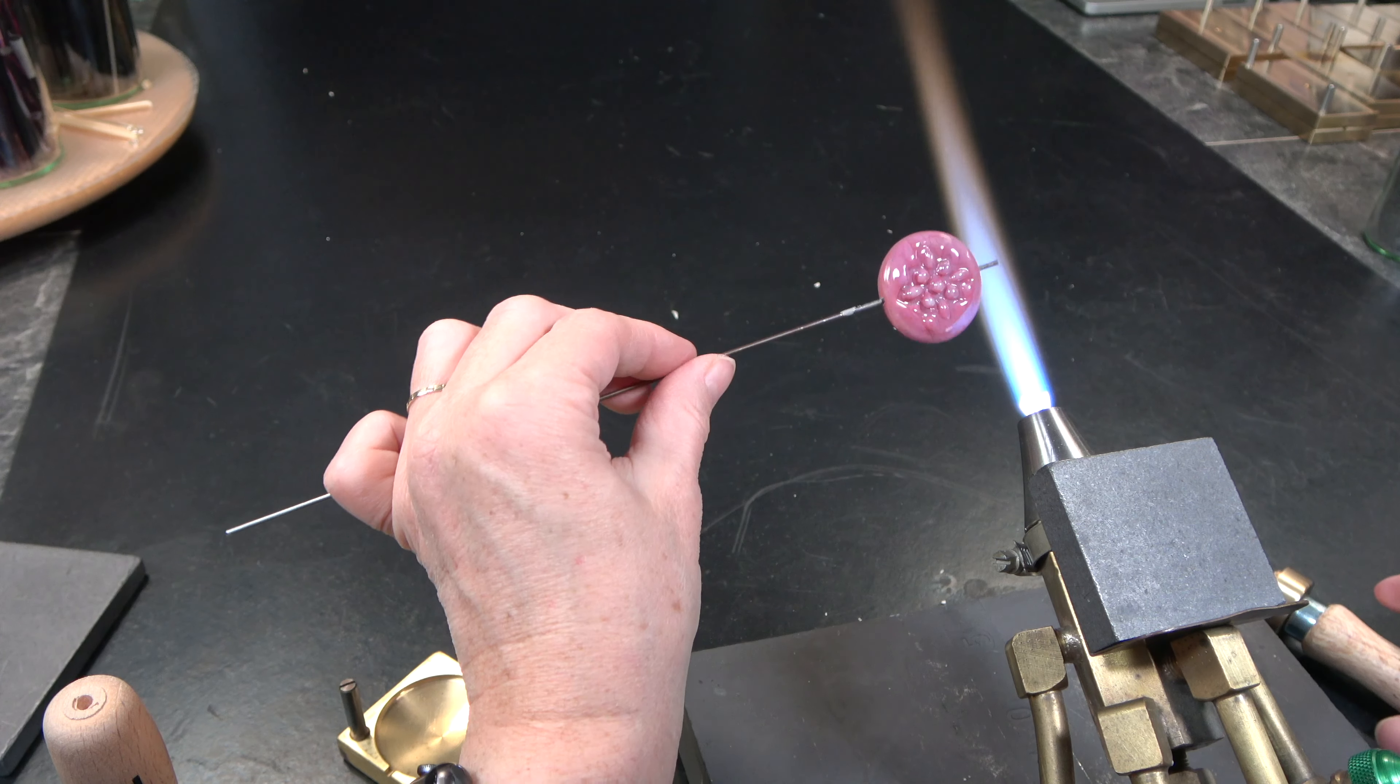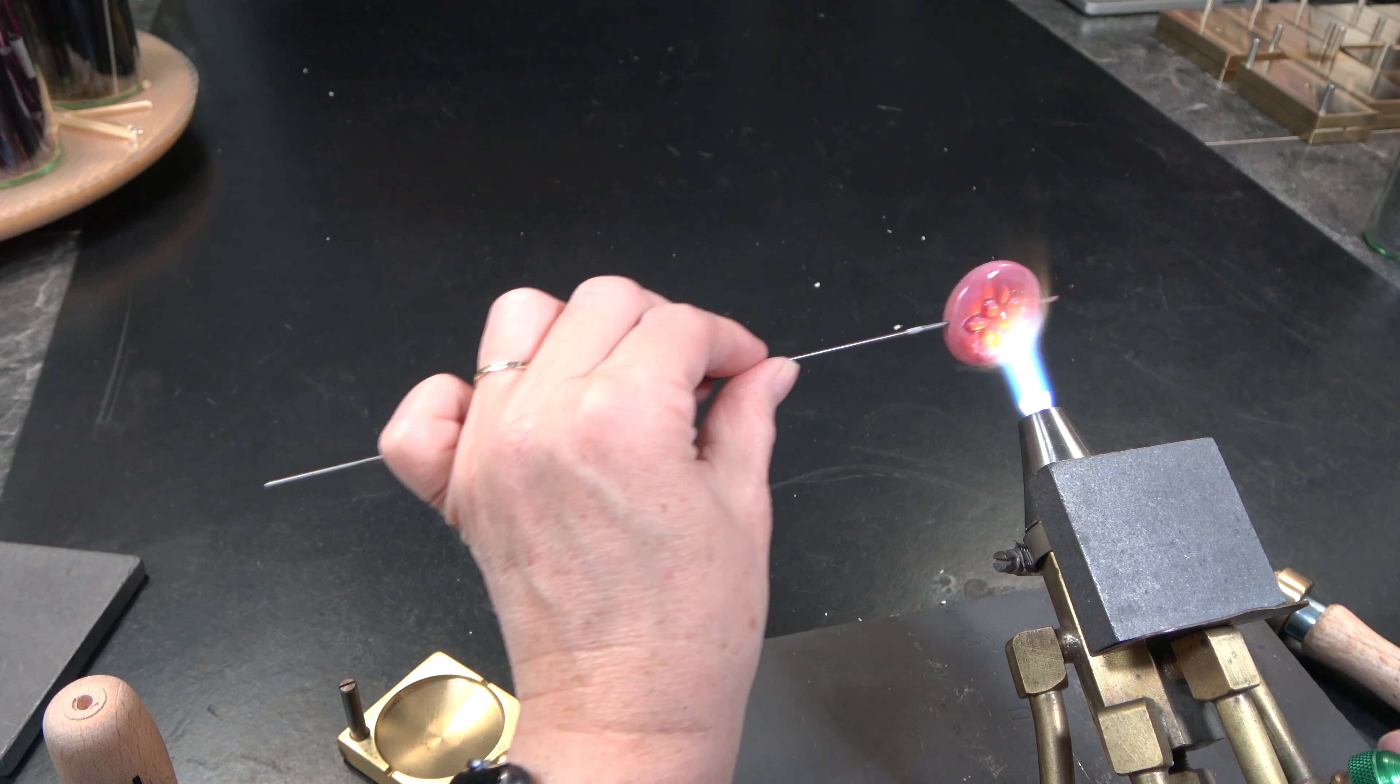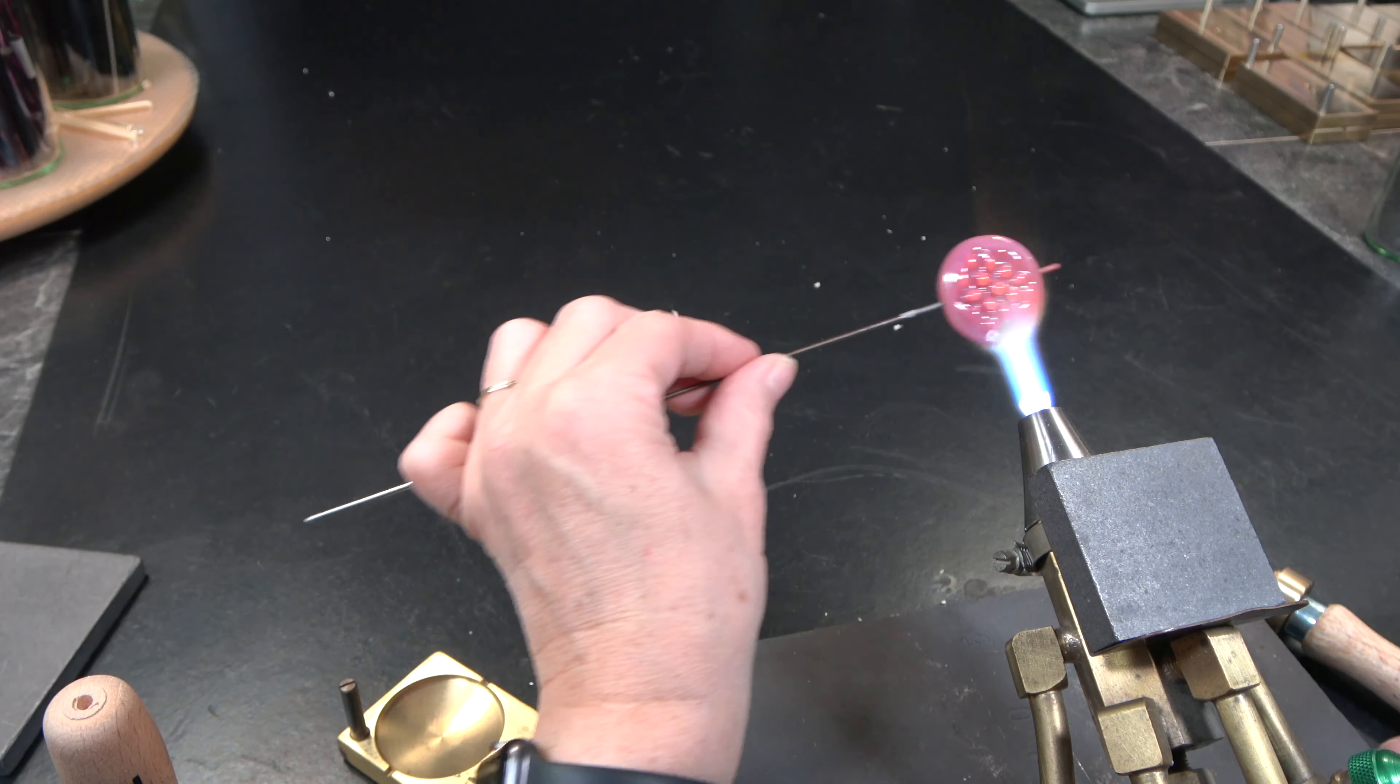Heat up the bead evenly, especially the edges and backside of the bead, and press it into the mold again.